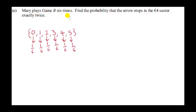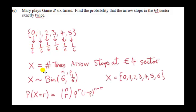Mary plays Game B six times. Find the probability that the arrow stops in the four euro sector exactly twice. These are all the possible outcomes for one of the six games, and for wheel B each outcome is equally likely with probability one sixth. Let the random variable X be the number of times the arrow stops at the four euro sector. X can take values zero through six — it's possible the arrow stops there zero times or up to six times.